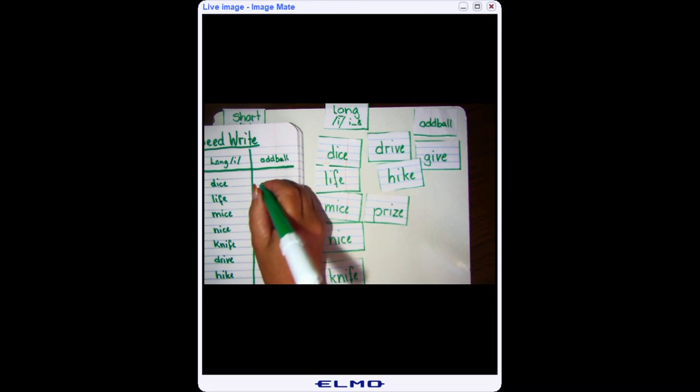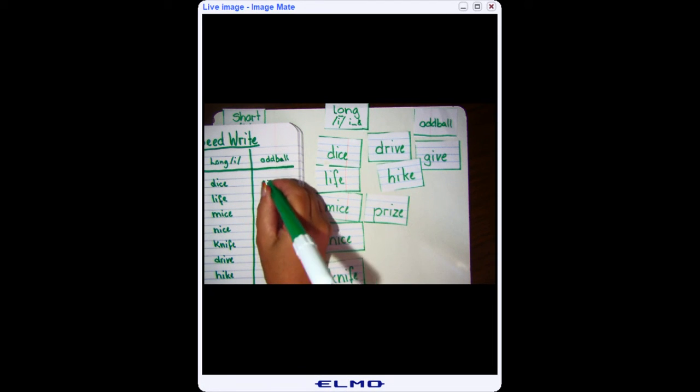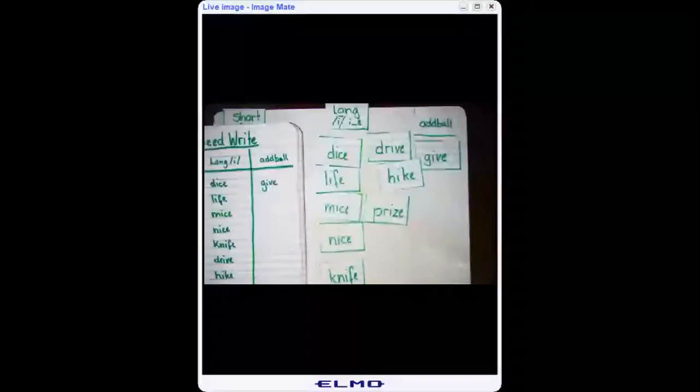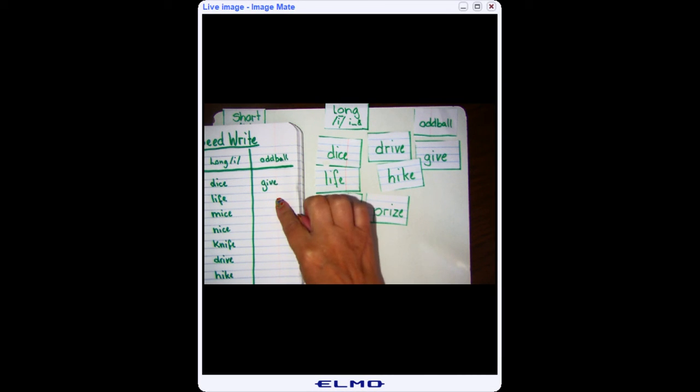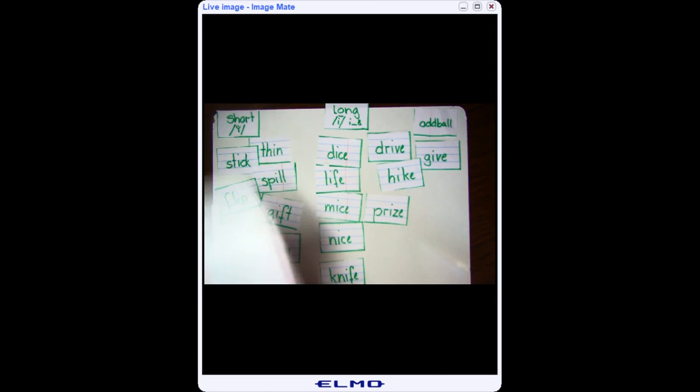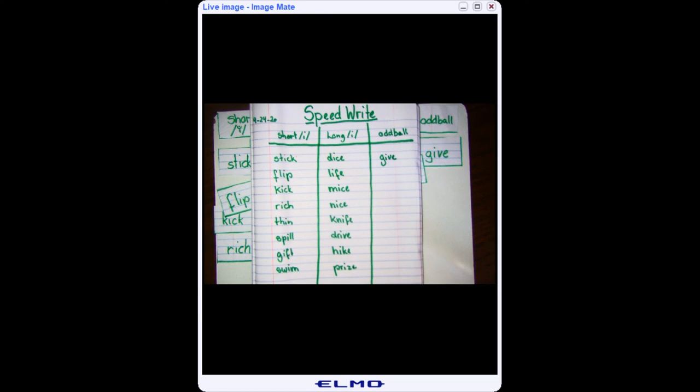And my oddball is give. All right. Done. So what I need you to do, if you were faster than me I want you to write down I win, or if I was faster than you I want you to write down you win. Make sure that you wrote all your words nice and neat. Take a picture of it and post it to ClassDojo. See you next time.